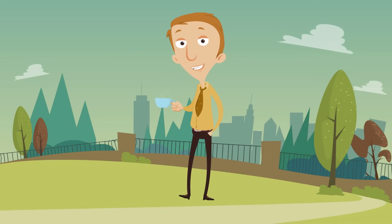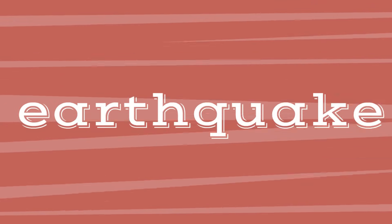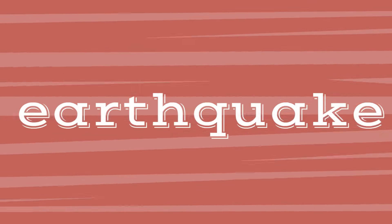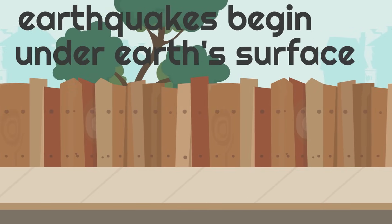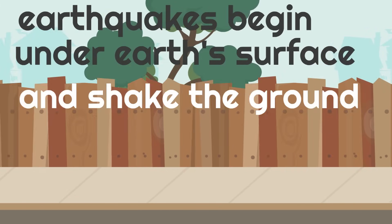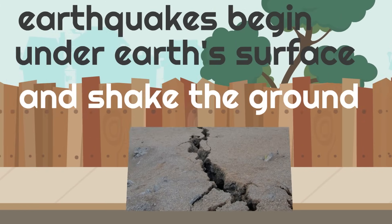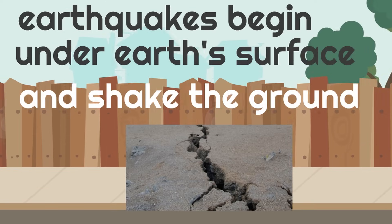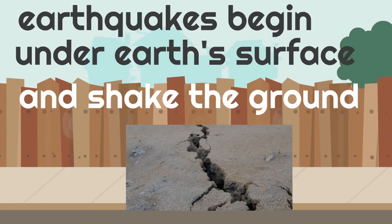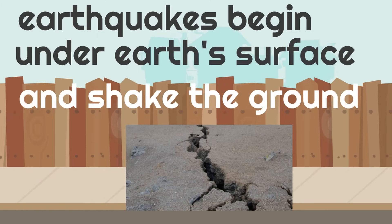When the pieces of crust move quickly, you could have an earthquake. Earthquakes begin under earth's surface and shake the ground. Here's a picture of something that can happen during an earthquake — do you see the massive cracks in the ground? The earthquake began under the earth's surface, shook the ground, and caused this crack.